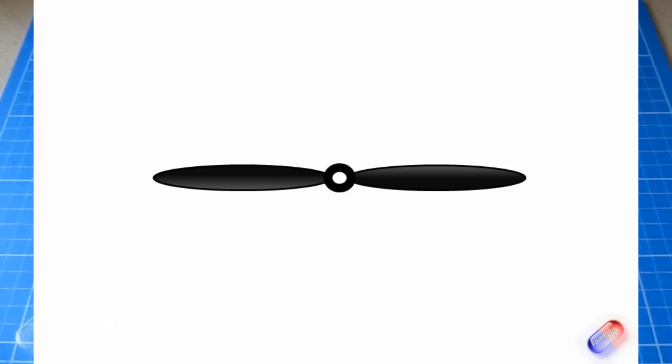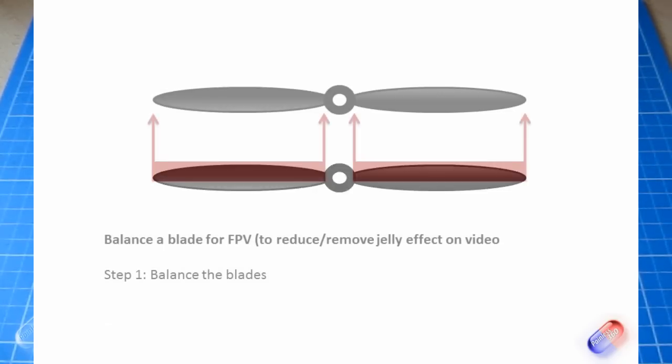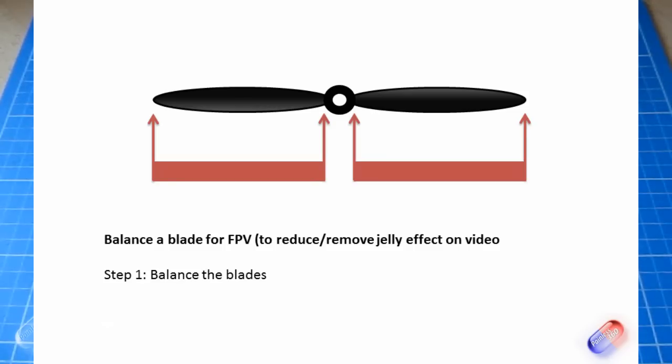There are two things that we need to think about. The first one is the same one that everybody is aware of, which is balancing the blades itself. This is where each of the blades have to be the same weight, so that when they're on the balancer, like a seesaw or like a scale, they balance out and they're at the same level. And that's something that everybody does, and that's the way that I've been doing it for as long as I can remember.